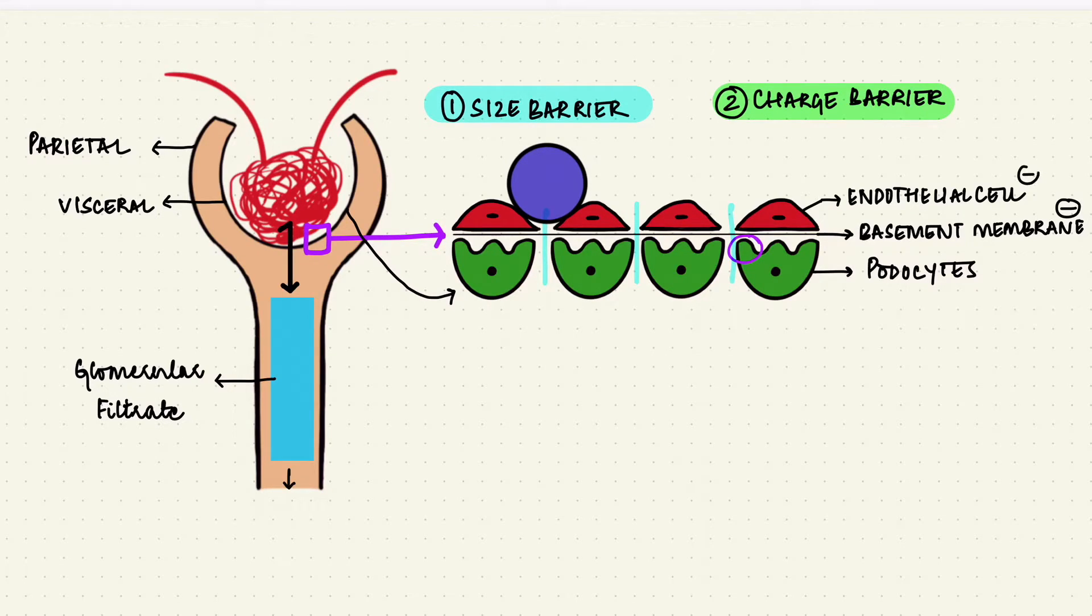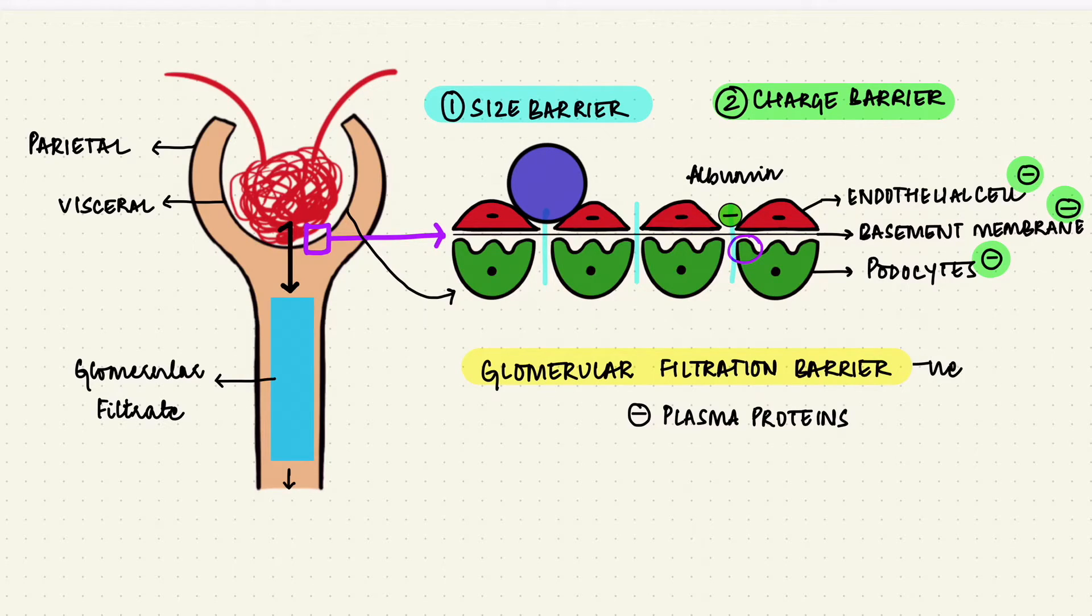There are substances like proteoglycans in the basement membrane which give it a negative charge. All three layers are negatively charged so they repulse substances with negative charges like albumin even though it's small enough to fit through. So this filtration membrane or the glomerular filtration barrier does not let plasma proteins through. If there's any damage here, like if there's loss of this negative charge which would happen in something like minimal change disease, proteins will appear in the urine and that's called proteinuria.